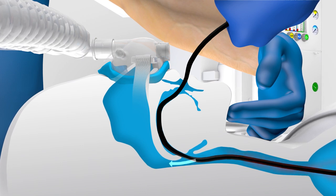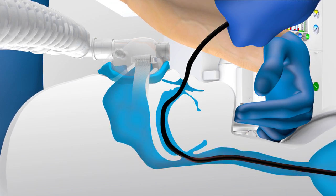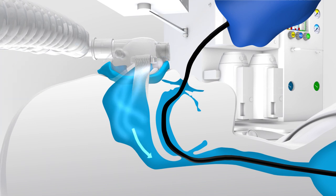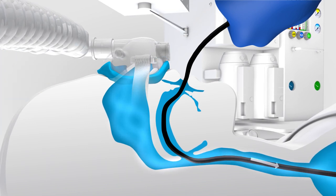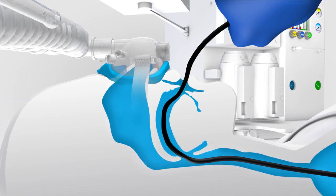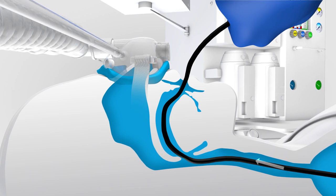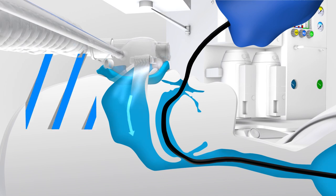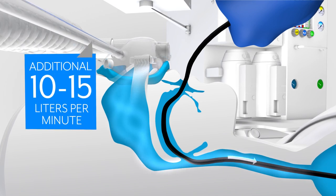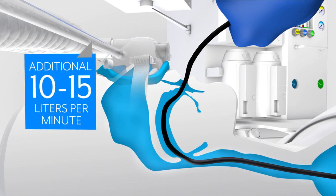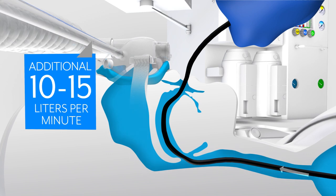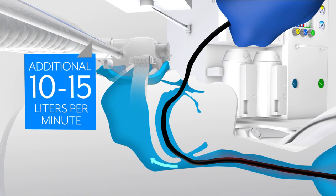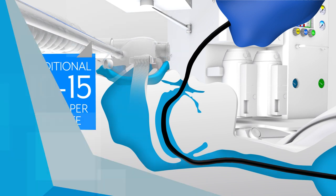During procedures where you expect an excessive leak from the mouth such as awake fiber optic bronchoscopy, rigid bronchoscopy, and laryngoscopy, attach a second source of oxygen to the supplemental oxygen port using any standard oxygen tubing. The additional 10 to 15 liters per minute supplied from an auxiliary source helps to overcome the mouth leak and in combination with the flow from the circuit delivers pressurized high flows of oxygen through the nasopharynx directed towards the glottis.